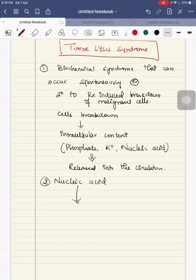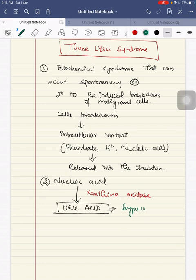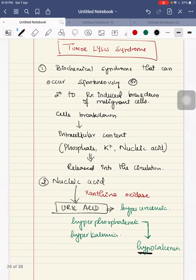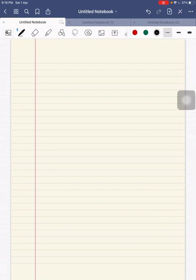The nucleic acid is broken down by the enzyme xanthine oxidase into uric acid. So this leads to hyperuricemia, hyperphosphatemia, and hyperkalemia. Secondary effect of this hyperphosphatemia leads to hypocalcemia.